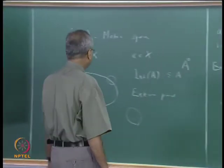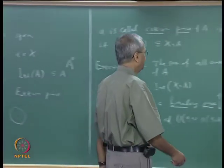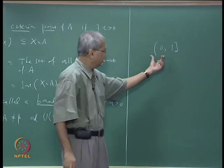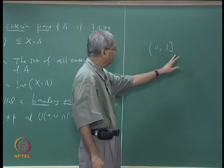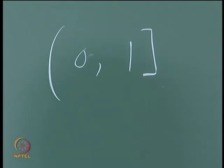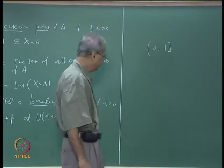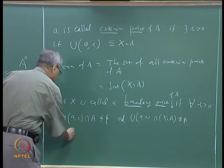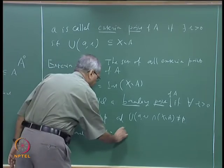You can easily see examples of interior points, exterior points, and boundary points in the examples we have seen. For example, if you take the interval 0 to 1, we have seen that the open interval (0,1) is the interior. The exterior will be open on both sides. The boundary points are just the two points 0 and 1. The set of all boundary points is called the boundary of A.